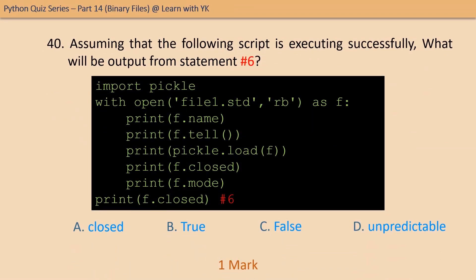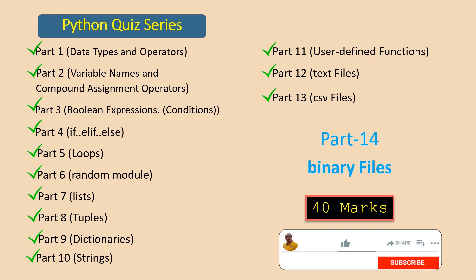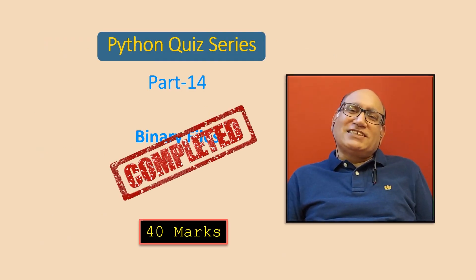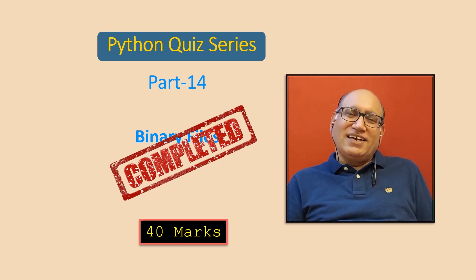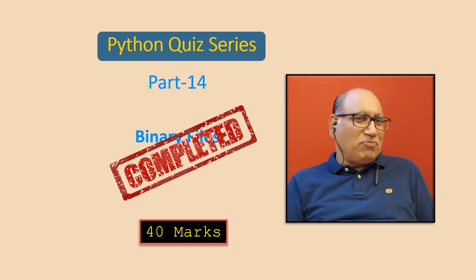Question number forty: same code — tell the output of statement number six. The correct answer is option B — true, because the file has been closed now. That's all for this part of the series. Please use the comment section for any feedback or queries. I'll be back soon with the next part. Till then, bye bye, happy learning!